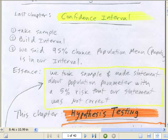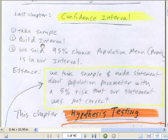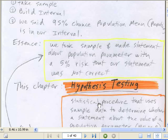Let's go over to the PDFs. For confidence intervals, remember we took a sample, we built an interval, and then we said something like 95% chance that the population mean or proportion is in our interval. In essence, we took a sample and made a statement about the population parameter. We ran a risk — because unless we do the entire population, we're going to run the risk that our interval does not contain the population parameter. So we have a 5% risk that our statement was not correct.